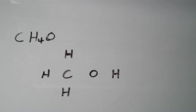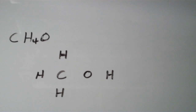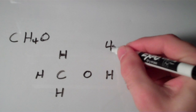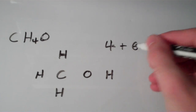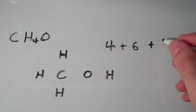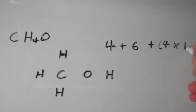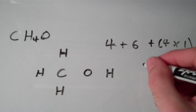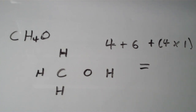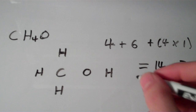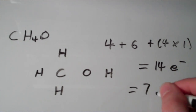Now we have to count up the electrons and the electron pairs. Carbon has four valence electrons, oxygen has six, and each of the hydrogens has one — so four times one. Four plus six is ten, plus four is fourteen valence electrons. Divide fourteen by two and you'll get seven electron pairs.